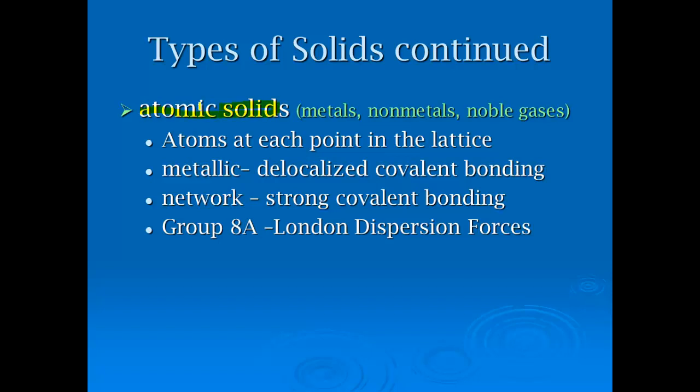Atomic solids, which we have not really focused on all that much, have atoms at each lattice point. Primarily, the main ones we focus on are called metallic, and these are delocalized covalent bonding. This is also when we refer to as our sea of electrons. You also have atomic network or network, and these are just kind of a unique, strong covalent bond. These are things like diamond, quartz for silicon, where you have only one type. And then also for group 8A, or group 18, as we would probably call it, you have London dispersion forces, and that's going to be all our noble gases.